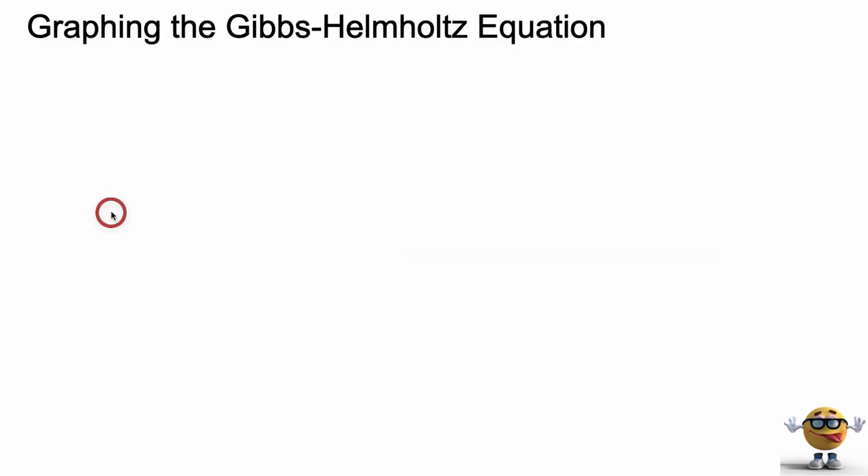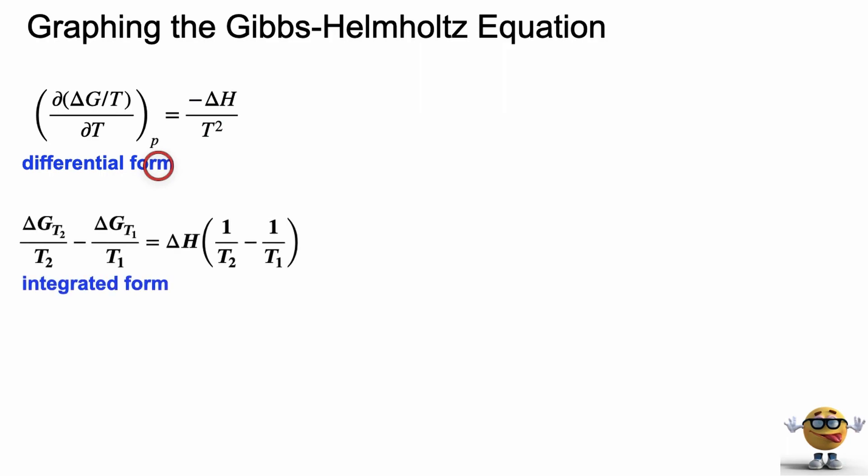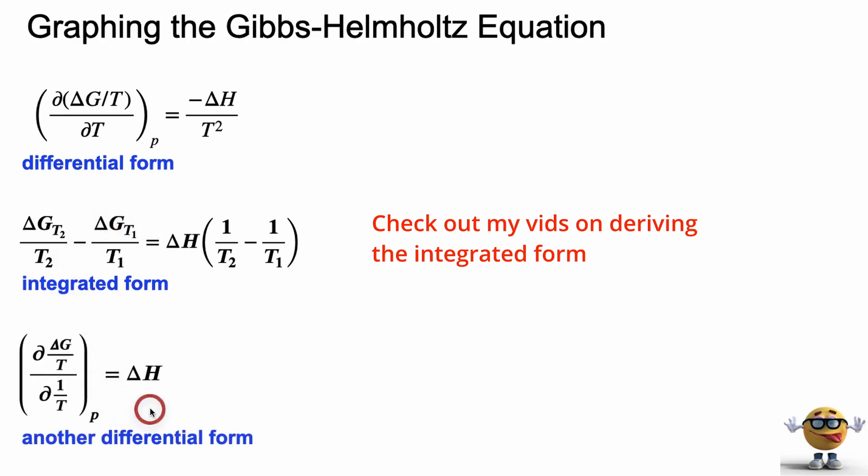To graph this, I'm going to show you a couple different forms of the Gibbs-Helmholtz equation. Hope you appreciate going through this. So this is the differential form that we've seen. And we can also integrate this to get the integrated form. And one more form is another differential form, which they show in the textbooks. But if you look at this form right here, this is showing the change of delta G over T versus the change in 1 over T, differential changes.